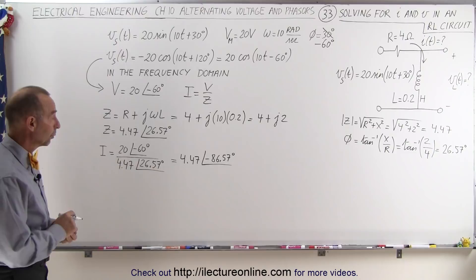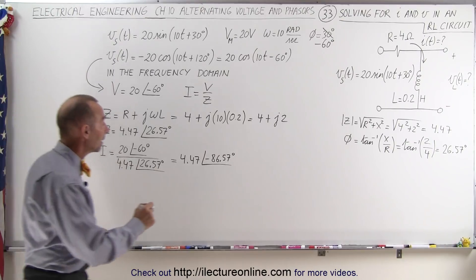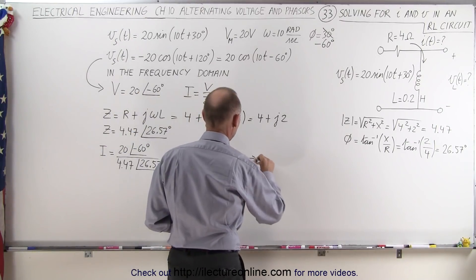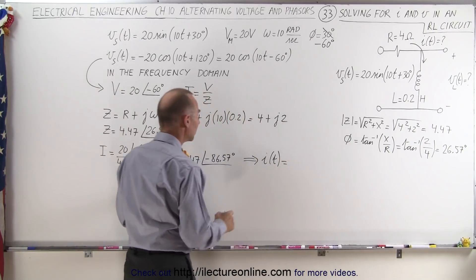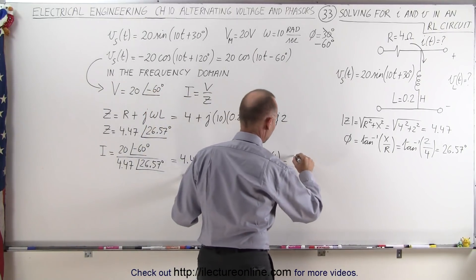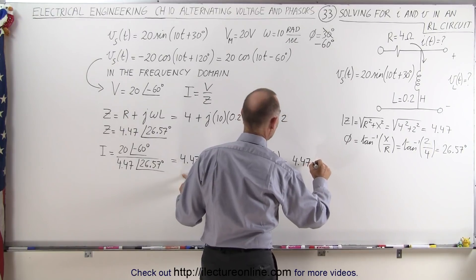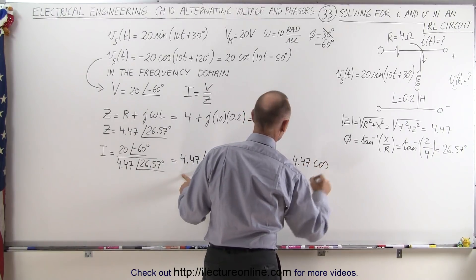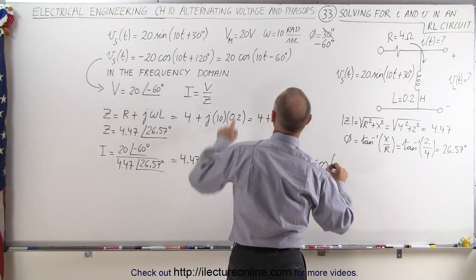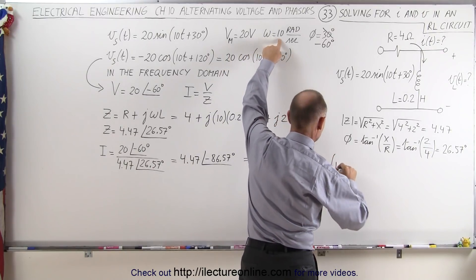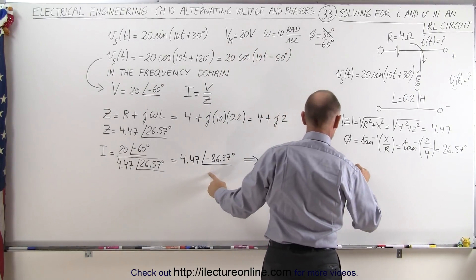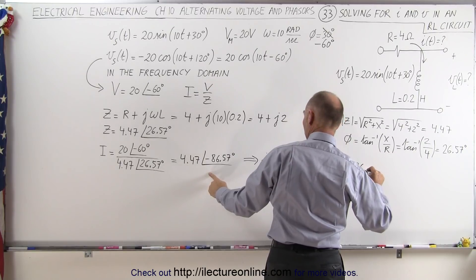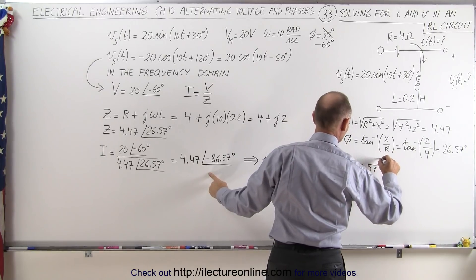Now we have the current, which means we can express the current in the time domain. I as a function of time for the whole circuit is equal to the amplitude of 4.47 times the cosine of omega·t — which is 10t — with a phase angle of minus 86.57 degrees.